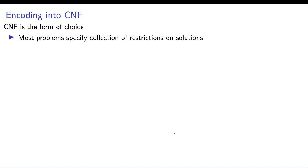Encoding of choice is CNF. So you may ask why CNF? One of the basic reasons is that most problems show up as a collection of restrictions of solutions. Each constraint will say this is not allowed or that is not allowed. This forms a natural conjunction over some specific condition.